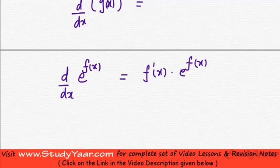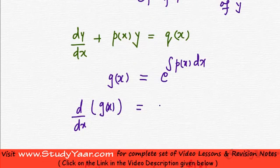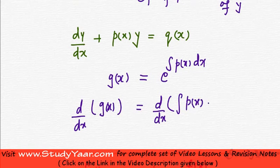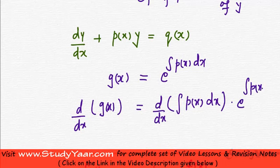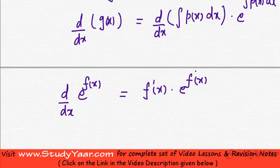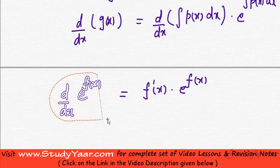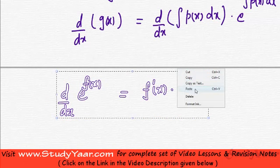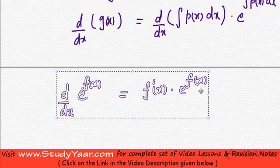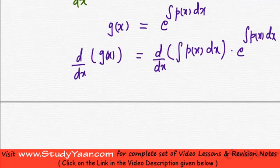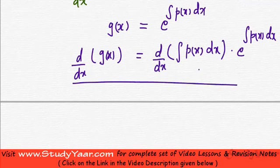So over here I am going to have d by dx of integral p(x) dx dot e raised to power integral p(x) dx. Let me just take this thing away, I will just get rid of this and I will now simplify this.